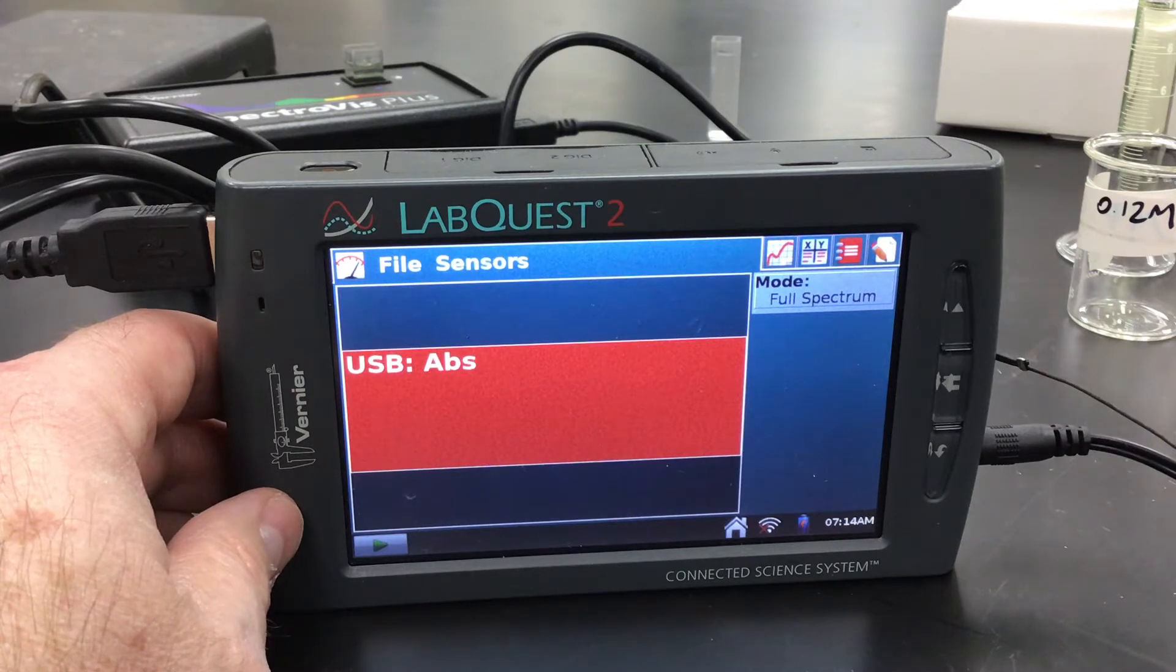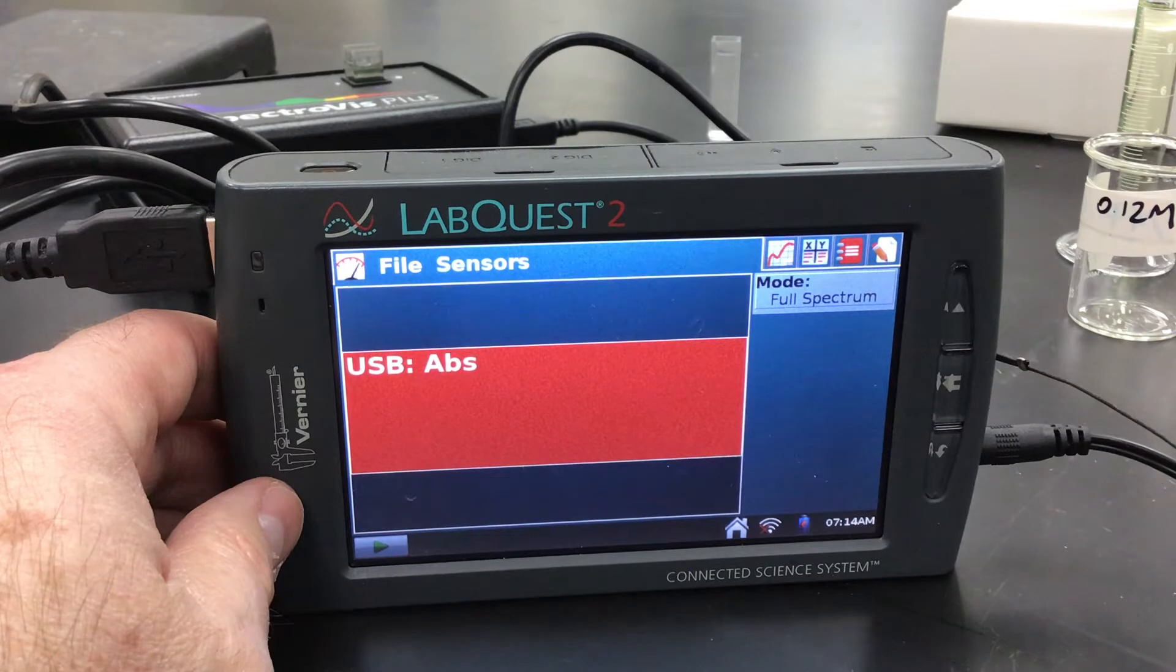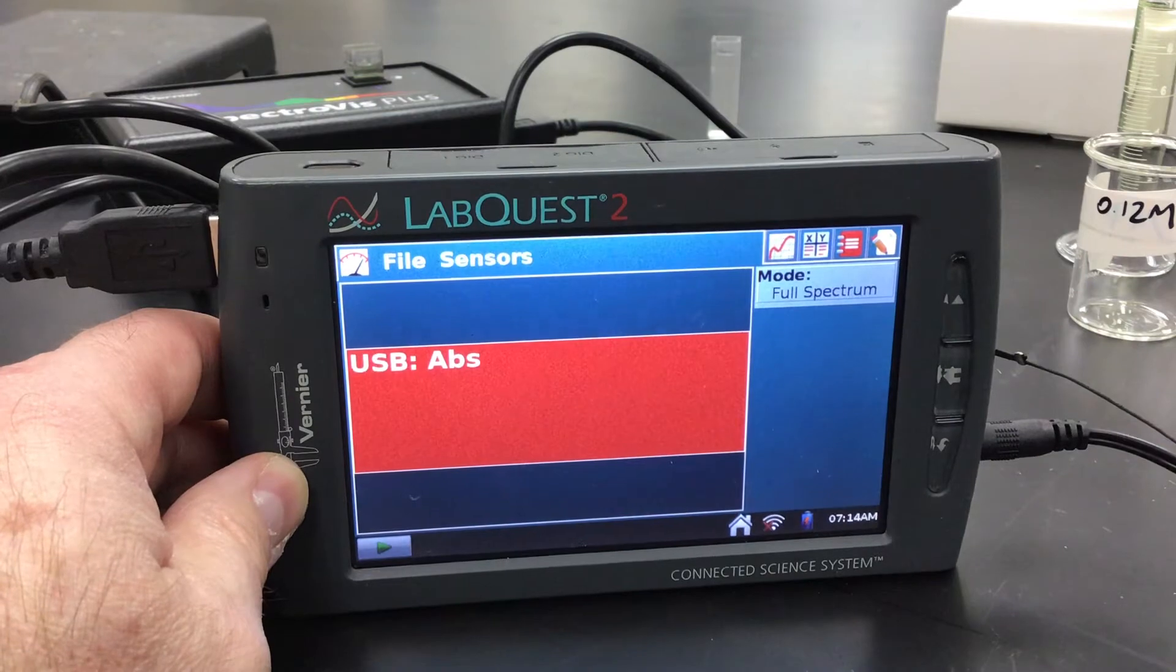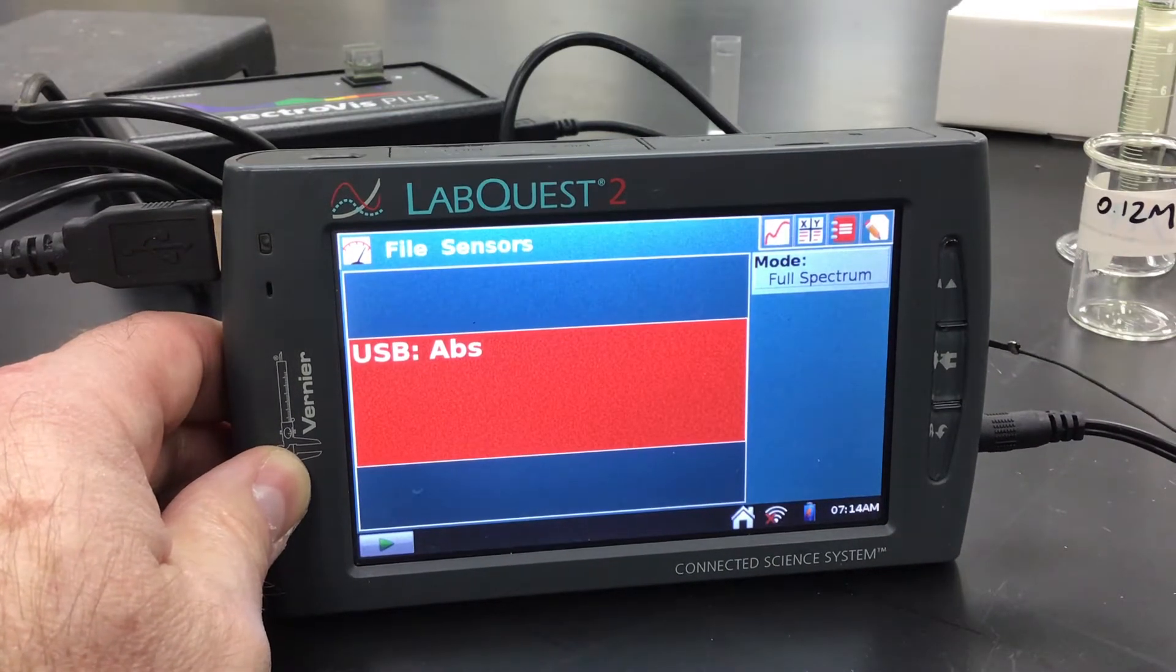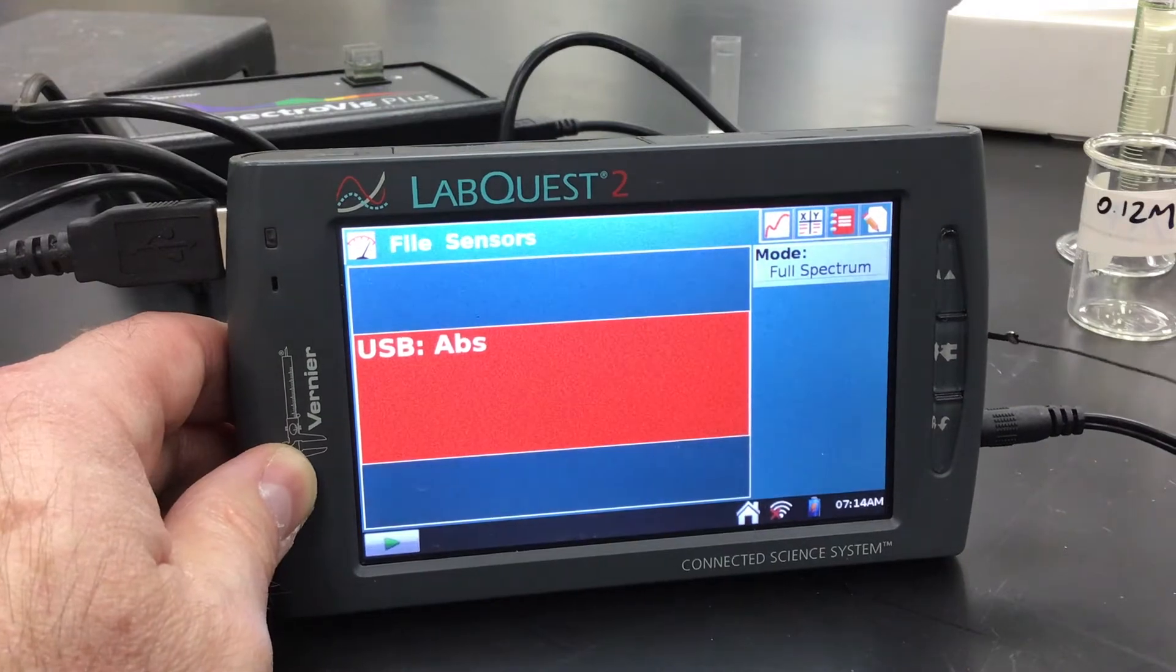So far, I have calibrated my spectra viz with a water blank. And next, what we're going to do is set our wavelength. Just so that we have something in there as far as solution-wise, I put my iron solution in the spectra viz.